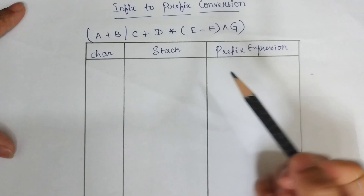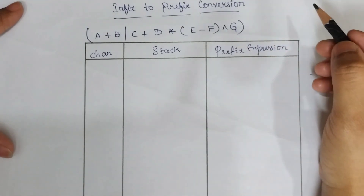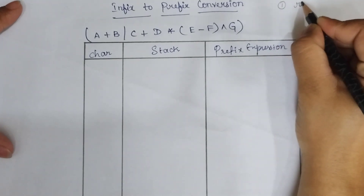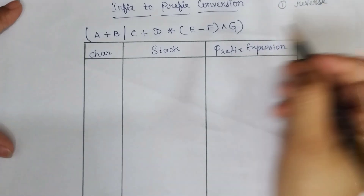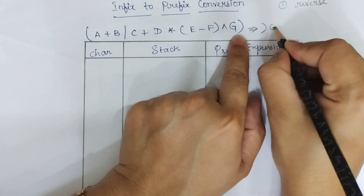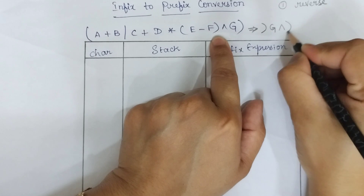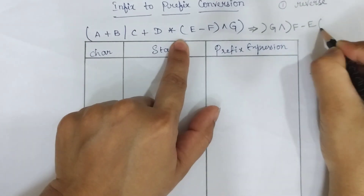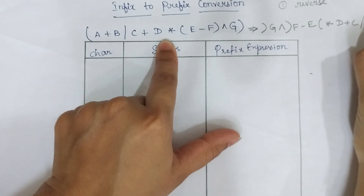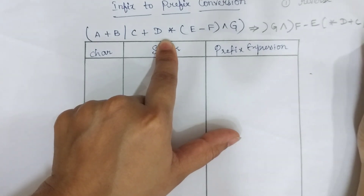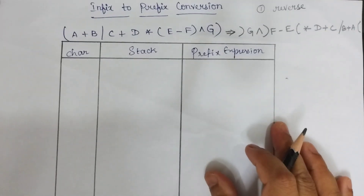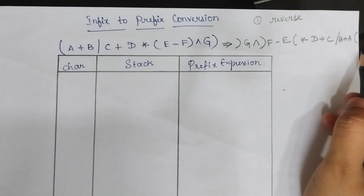This is the infix expression we have. The first rule of converting infix to prefix expression is to reverse the given infix expression. After reversing, the resultant expression will be: close parenthesis G, exponential, close parenthesis F minus E, open parenthesis, multiplication D plus C, division B plus A, open parenthesis. With this reversed expression, we are going to perform the conversion.